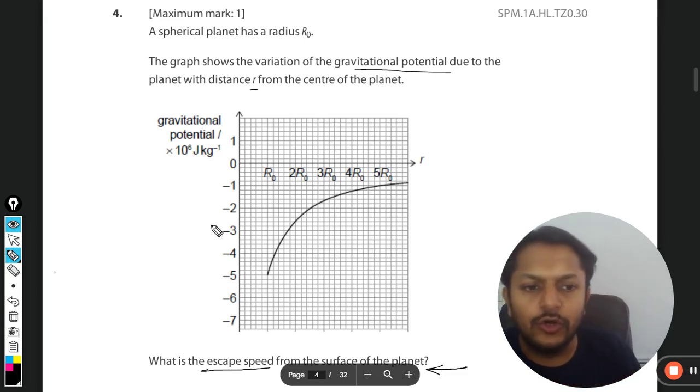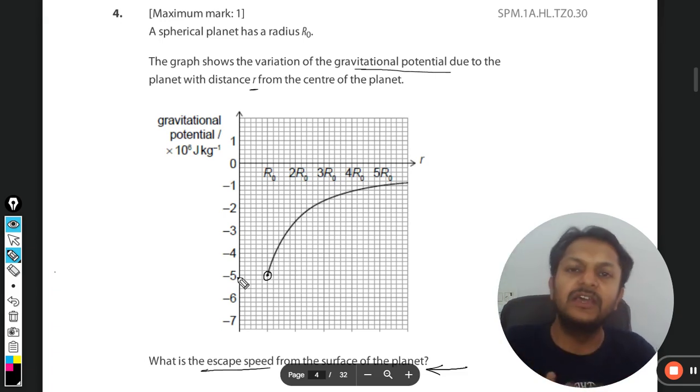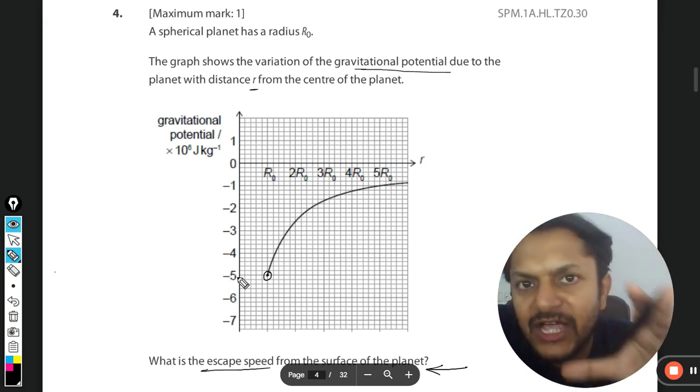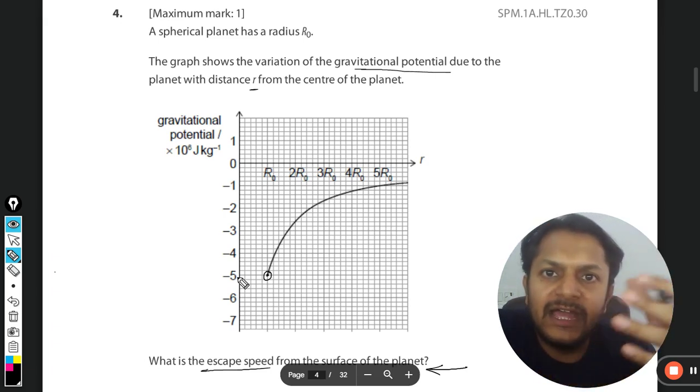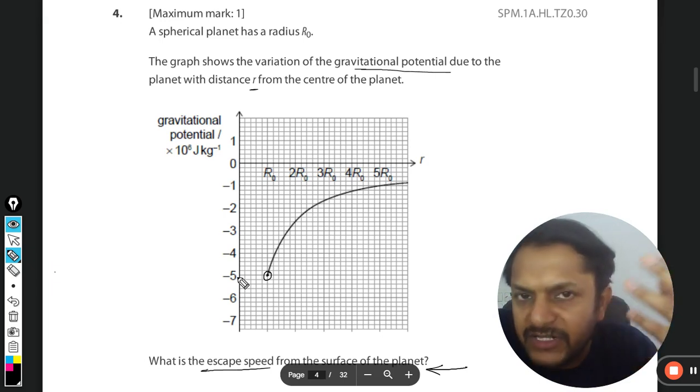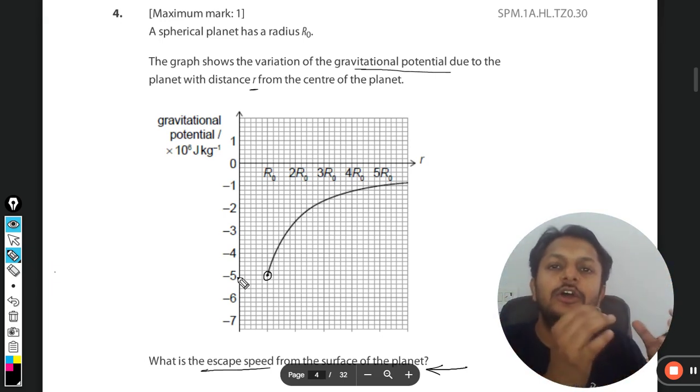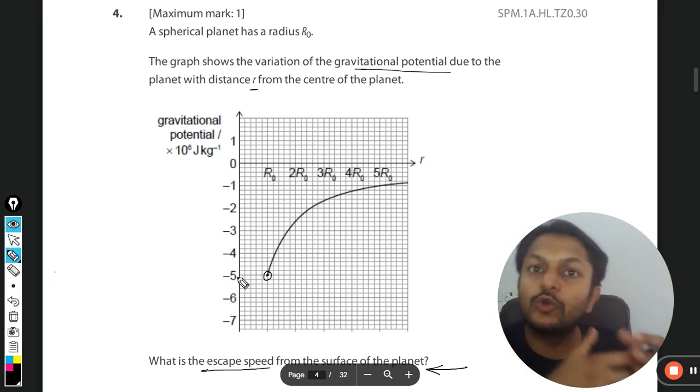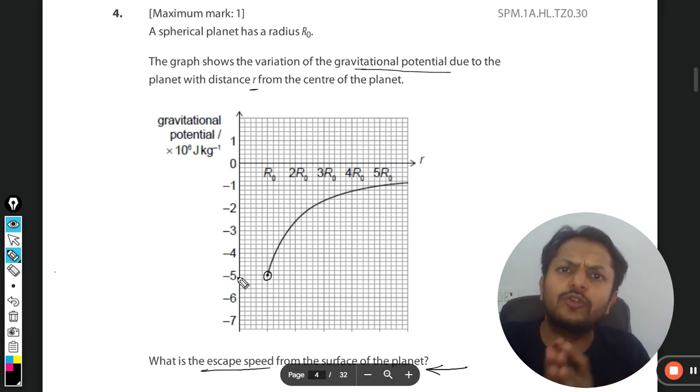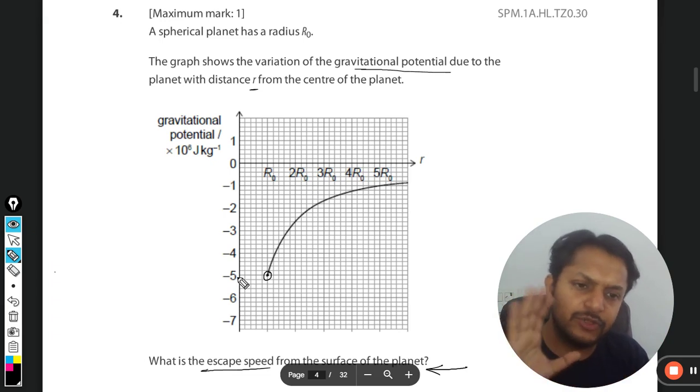So you want to find the escape speed. We will first find the potential at the surface. What is the fundamental of escape speed? We will first find the total energy at the surface of the planet and we will assume that is negative. So when that much energy is given to it, the total energy becomes zero. Zero total energy means that the body is at infinite distance, that is the concept.